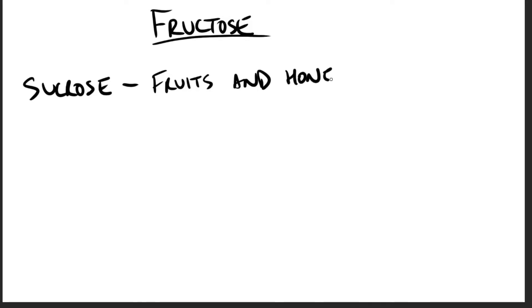For fructose to enter the pathways of intermediary metabolism, it must first be phosphorylated. This can be accomplished by either hexokinase or fructokinase. Hexokinase phosphorylates glucose in most cells of the body.